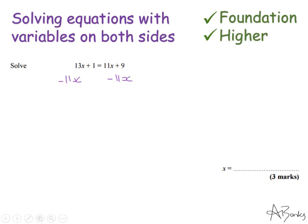On the left hand side I have 13x take away 11x, well that's 2x and then I've still got my plus 1 and on the right hand side my 11x take away 11x is nothing so I'm just left with 9.